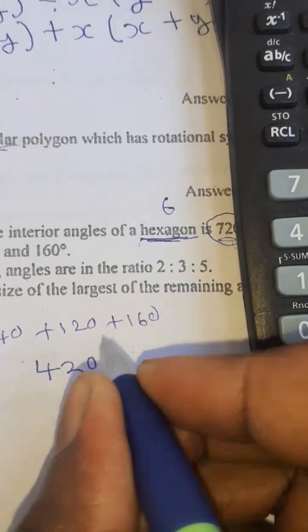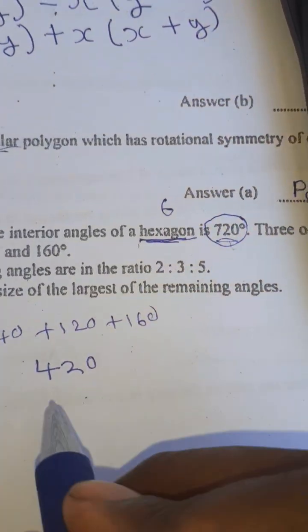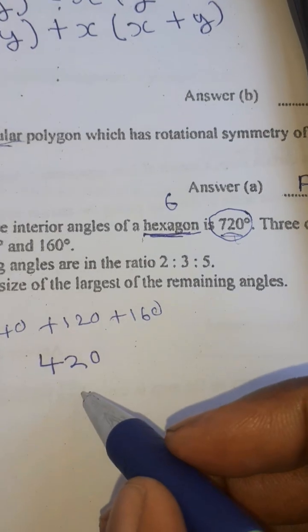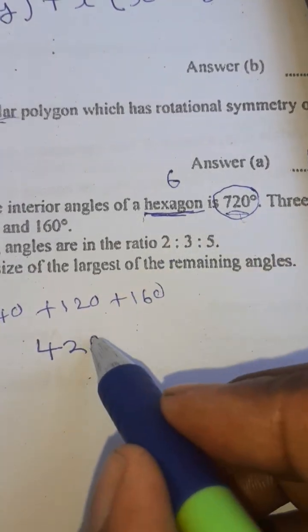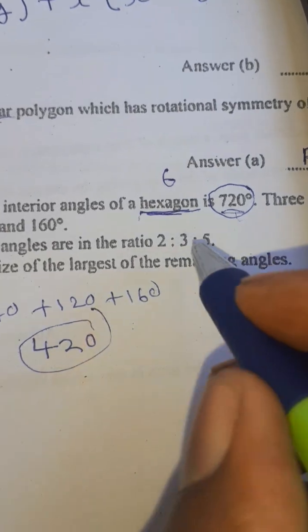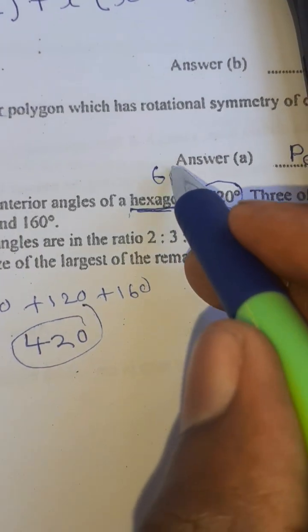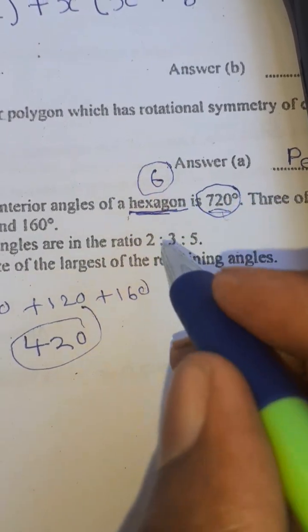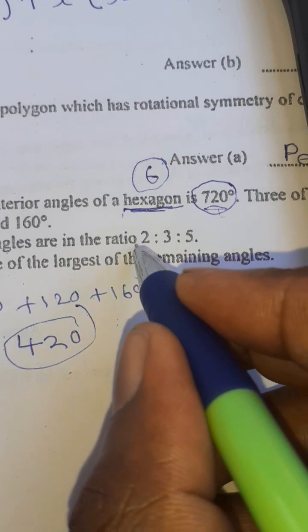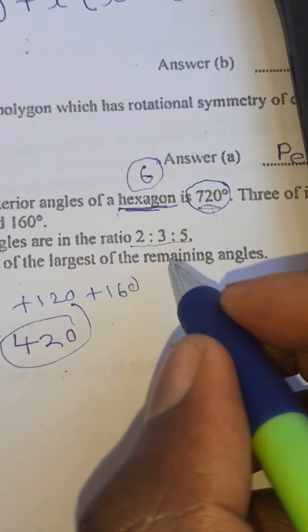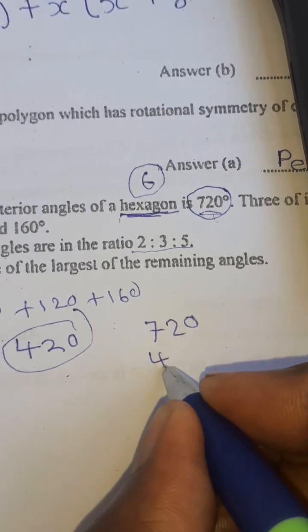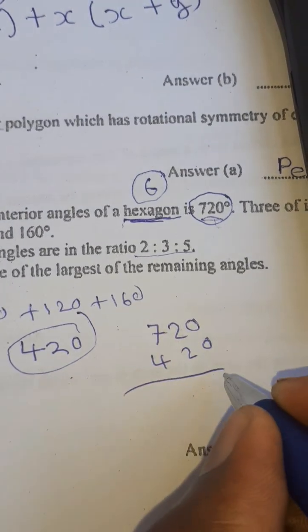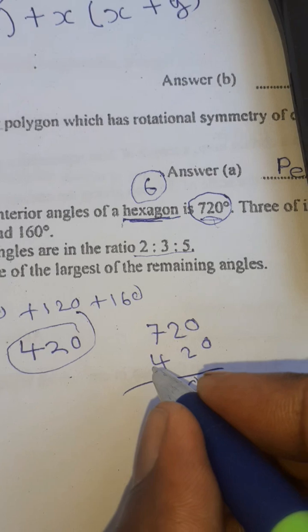These are the other three angles of a hexagon. The hexagon is six sides, so the other remaining angles are in the ratio 2:3:5. The total of 720 minus 420...